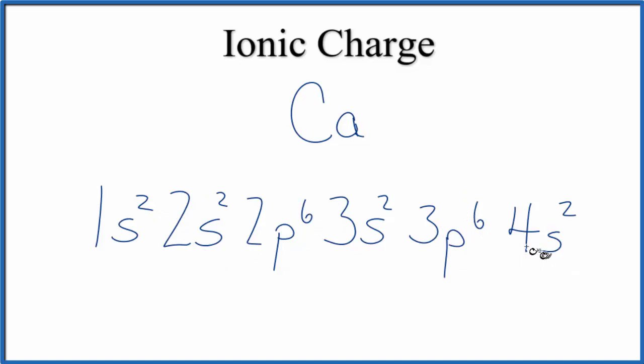So what calcium will do when it bonds to other elements, it will actually transfer or lose these two valence electrons. So when it does that, they're gone. Electrons are negative, and when you lose two negative charges, you become plus 2, which is the ionic charge on calcium.